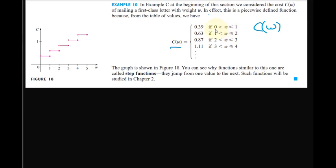So if w is between 0 and let's say 1 gram, it's probably, I don't know if it's grams or ounces. But anyway, if w is between 0 and 1, including 1 because we have less than or equal to here, then we use this formula, 39 cents.